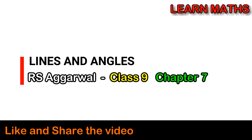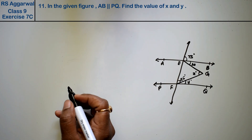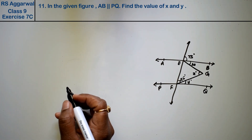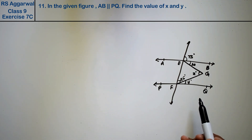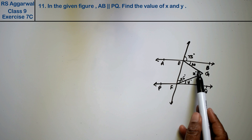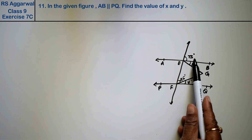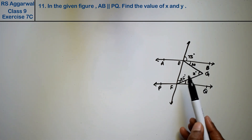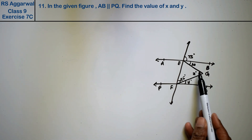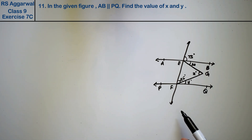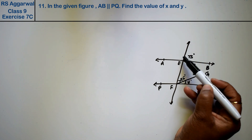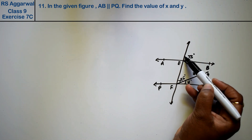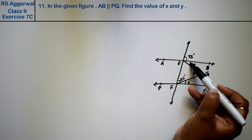Let's do question number 11 of Exercise 7C, that is Lines and Angles. Question 11: In the given figure, AB is parallel to PQ. Find the value of x and y. Friends, this angle is 75 degrees, this is 20, and this is 25. So we have to find the value of x and y. Now, EF is a straight line.